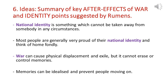To summarise some of the key after-effects of war and identity points made by Rumens: she's suggesting that national identity is something which cannot be taken away from somebody in any circumstances. She may be suggesting that most people are generally very proud of their national identity despite what's going on in their homeland. Thirdly, she might be implying that war can cause physical displacement and exile, but it can't erase or control memories of home — governments will never be able to control people's thoughts. Finally, the poem could suggest that memories can be idealised and actually hold you back, preventing you from moving on and accepting the truth.